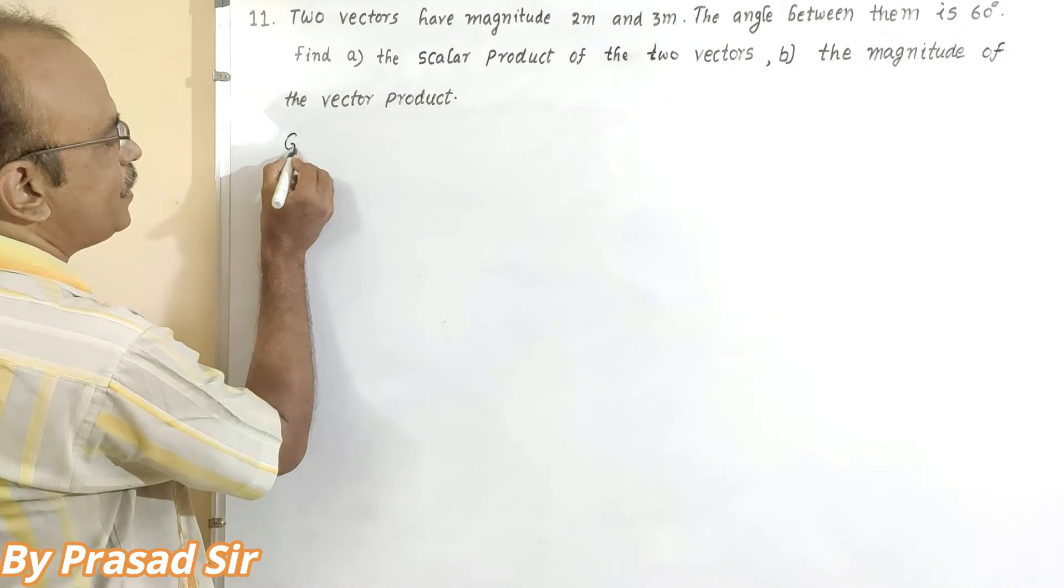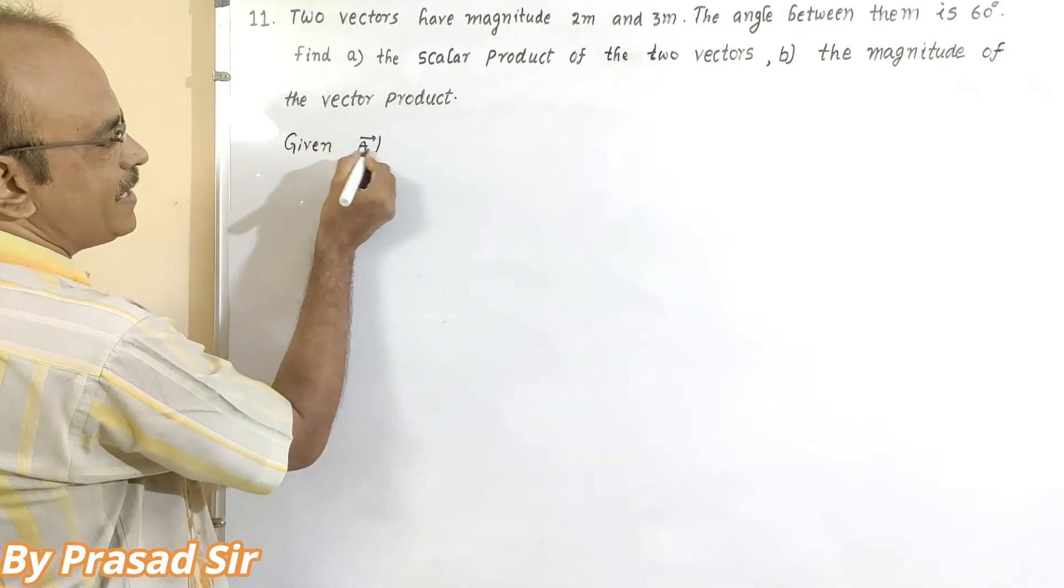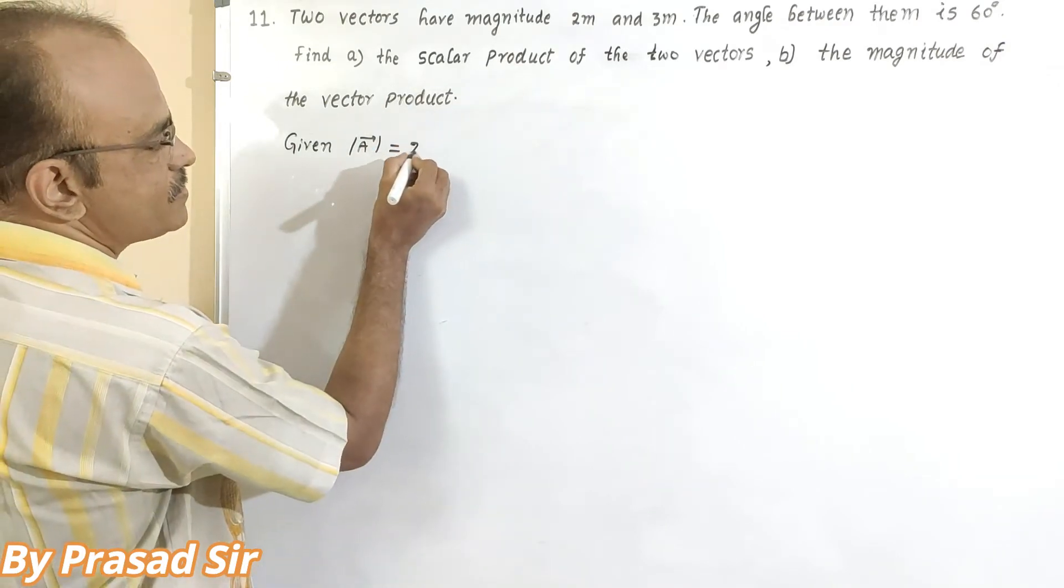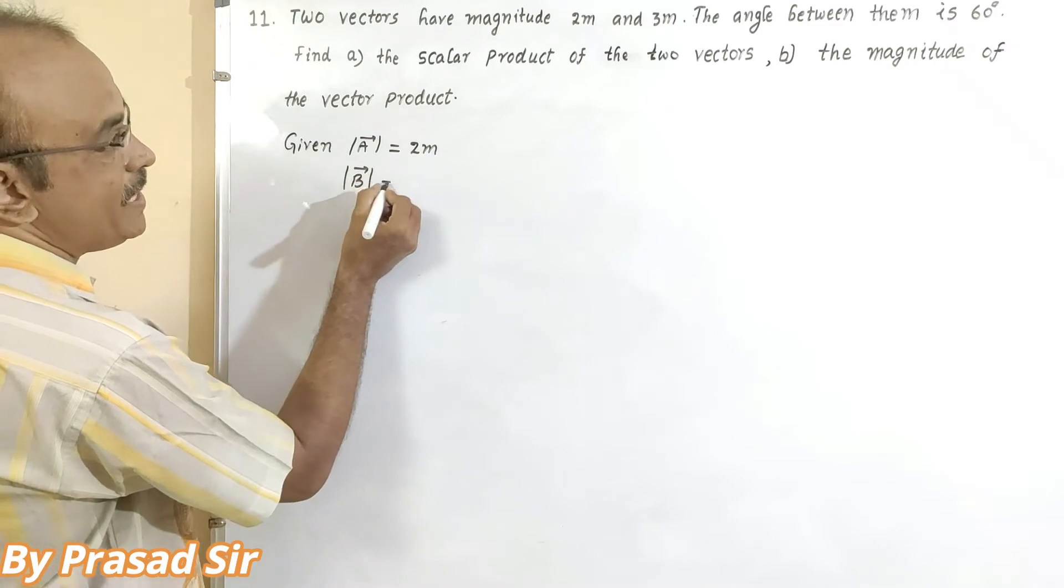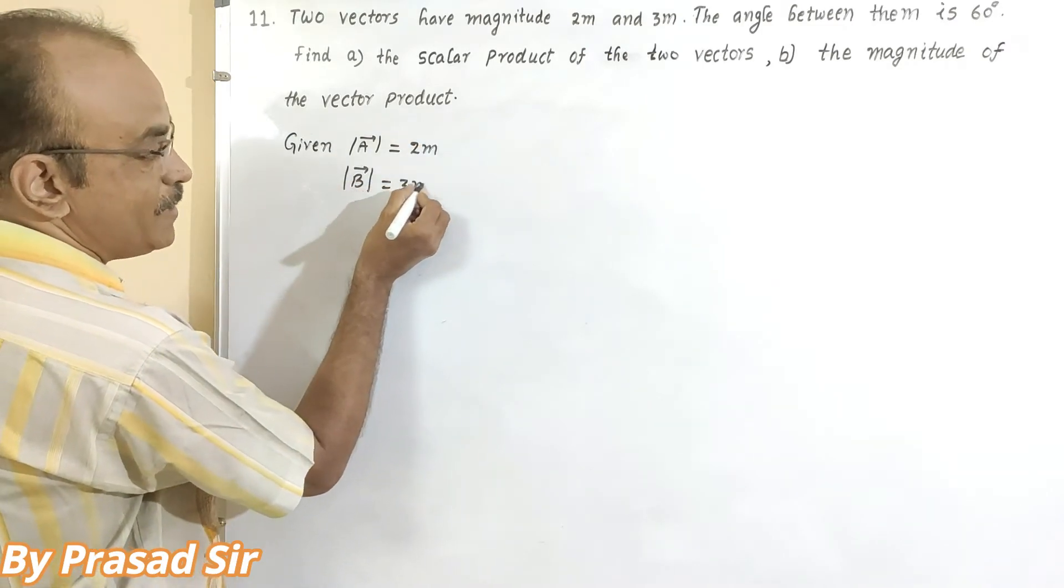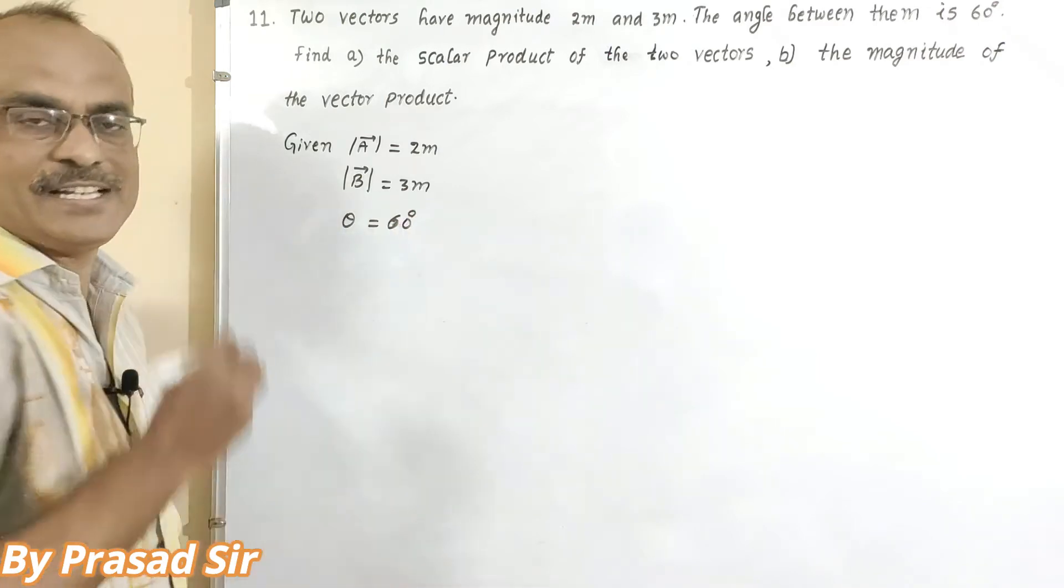To answer this one, first of all, what are the given values here? We are given the magnitude of vector A, that is 2 meters, and the magnitude of vector B is 3 meters, and angle between the two vectors theta is 60 degrees.